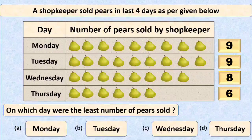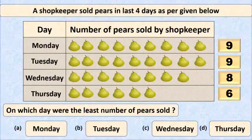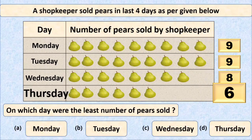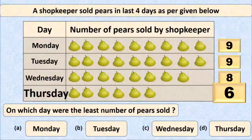The correct answer is the smallest number, and that is six. Six pears were sold on Thursday. So Thursday is the correct option — option D, Thursday is the right one, and we will put a tick mark at option D.